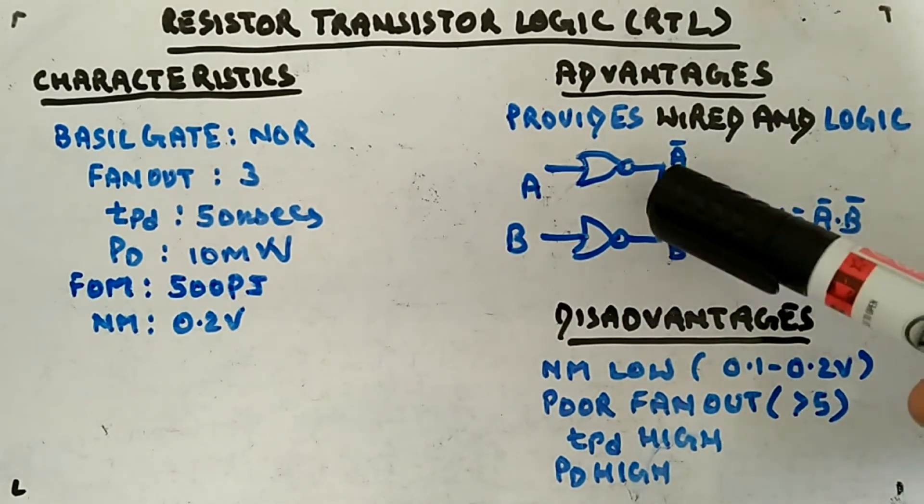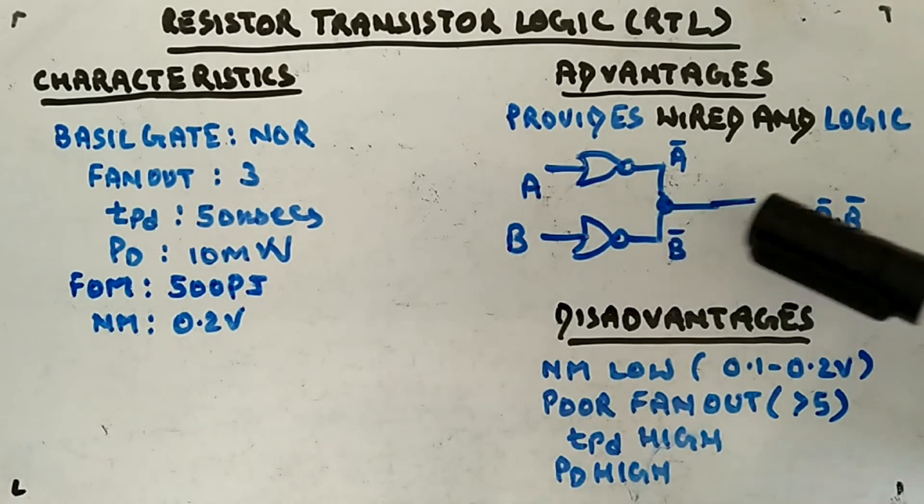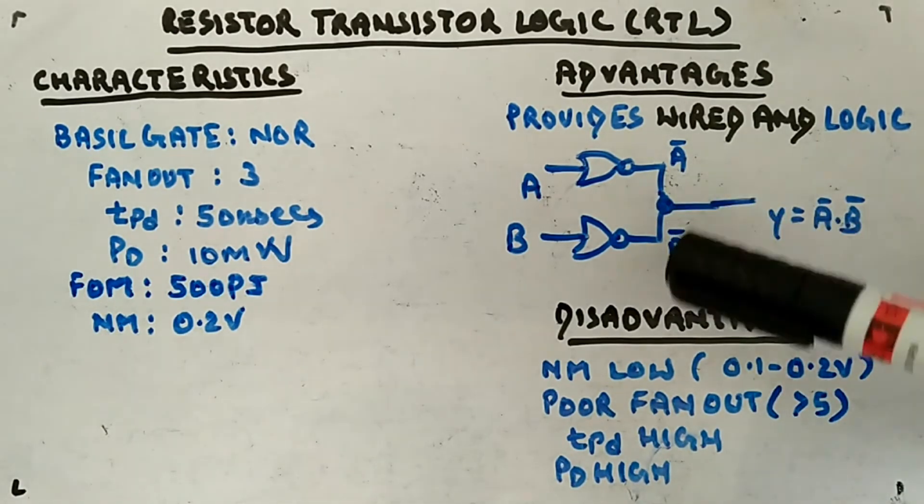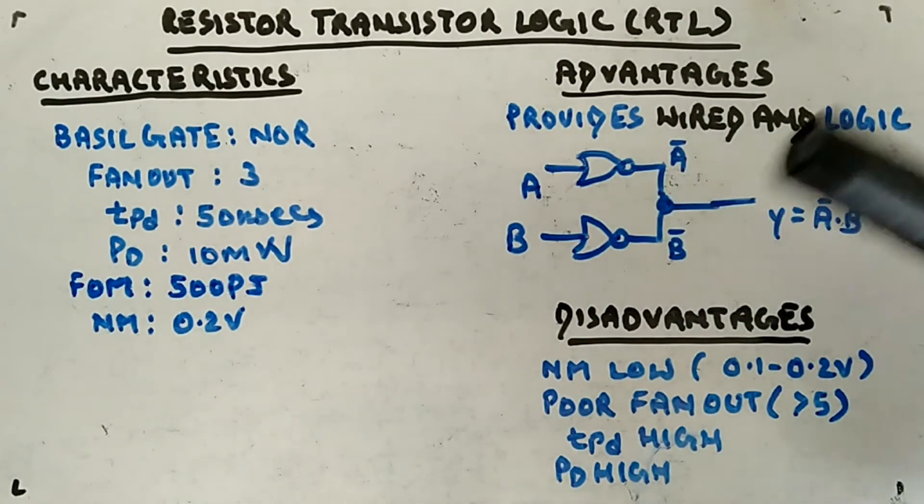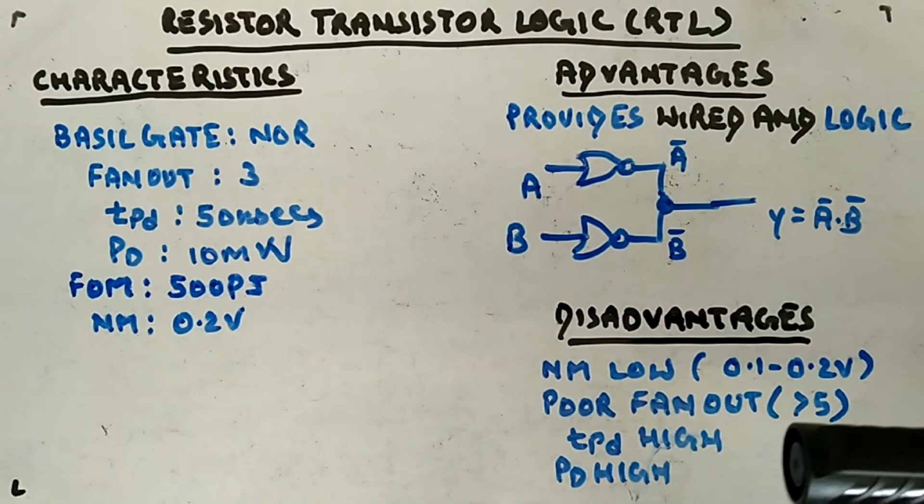You are connecting the two wires like this - the output you will get is AND of the two. This is an advantage provided in resistor transistor logic.